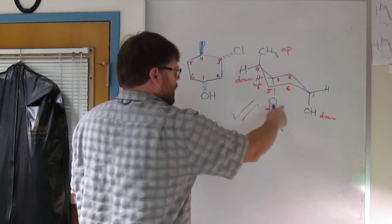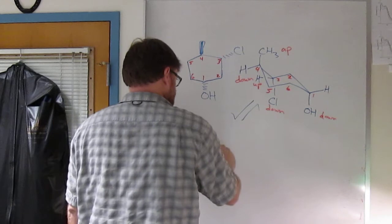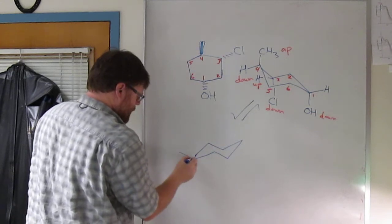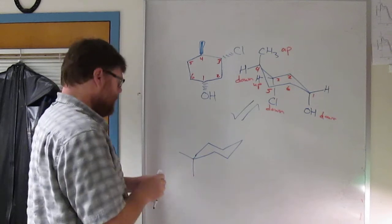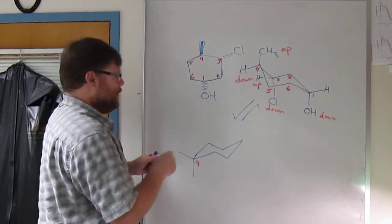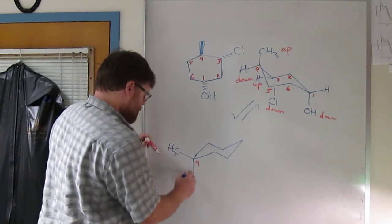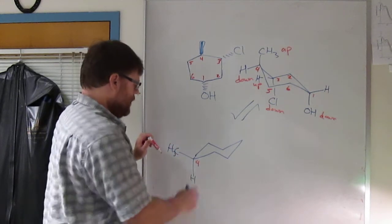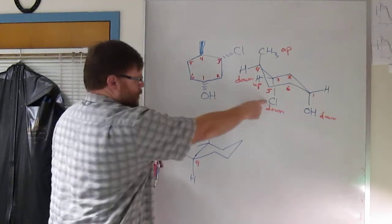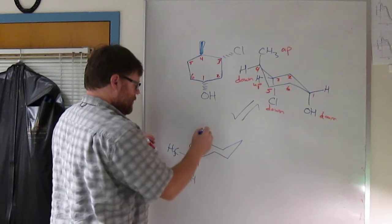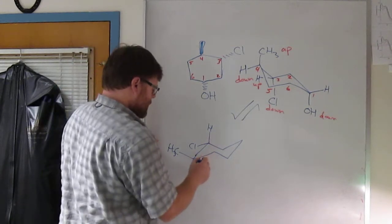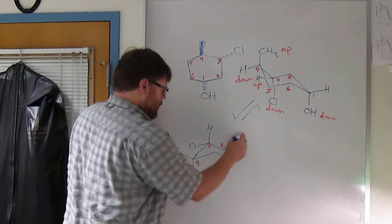Carbon 4, the up carbon will come down. Carbon 1, the down carbon will come up. Put our substituents in. There are the two substituents on carbon 4. The methyl belongs on the up carbon. Carbon 3, up carbon, down carbon. The chlorine is on the down carbon. That's 4, 3, 2, 1.